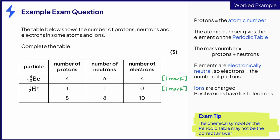The third row has an atomic number of eight, which from the periodic table is O for oxygen. The mass number is eight plus eight, which is sixteen. The number of protons is not equal to the number of electrons, so there is a charge. Two electrons have been gained, which cause a two minus ion. Overall, this gives ⁸₁₆O as a two minus ion, the final mark.